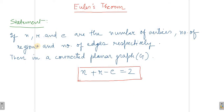If N, R and E are the number of vertices, number of regions and number of edges respectively, then in a connected planar graph G, N plus R minus E equals to 2. This is Euler's theorem.